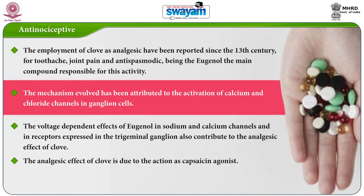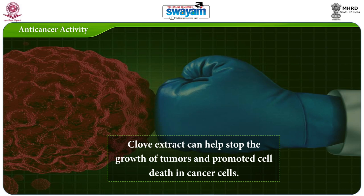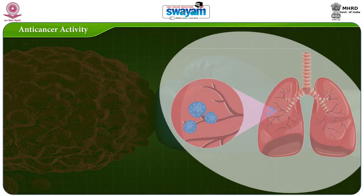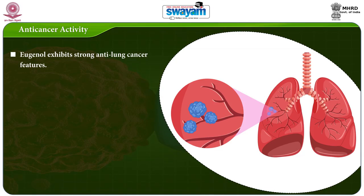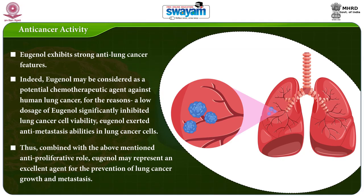The analgesic effect of clove is due to its action as a capsaicin agonist. Now the next activity is anti-cancer activity. Clove extract can help stop the growth of tumors and promote cell death in cancer cells. Eugenol exhibits strong anti-lung cancer features. Indeed, eugenol may be considered as a potential chemotherapeutic agent against human lung cancer, as a low dosage of eugenol significantly inhibited lung cancer cell viability. Eugenol also exerted anti-metastasis abilities in lung cancer cells, and may represent an excellent agent for the prevention of lung cancer growth and metastasis.